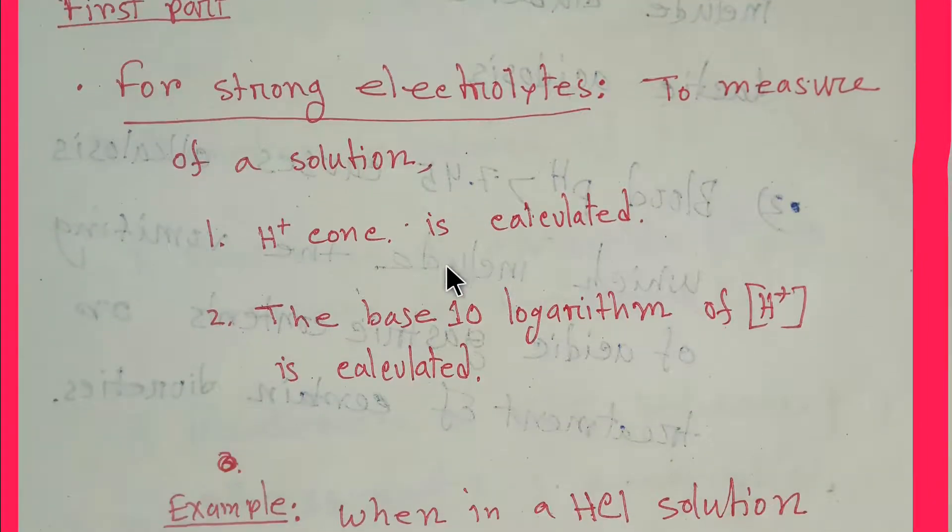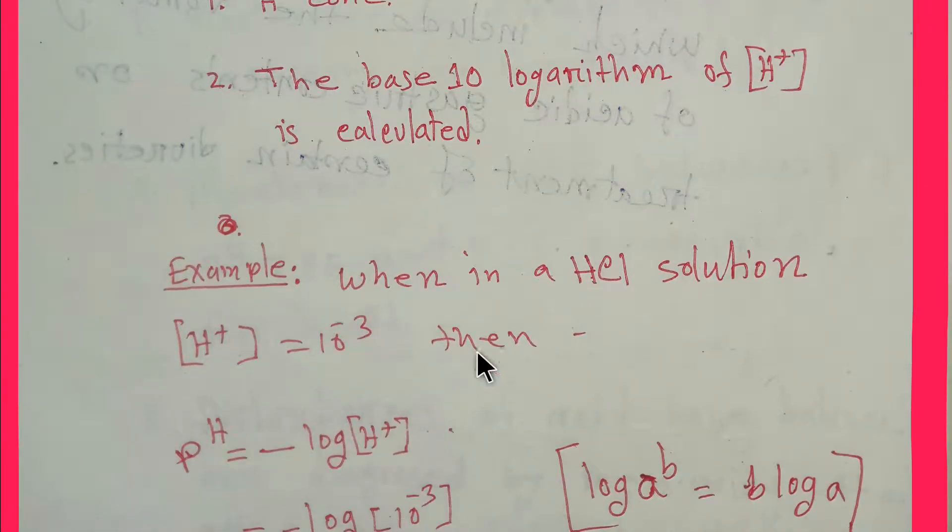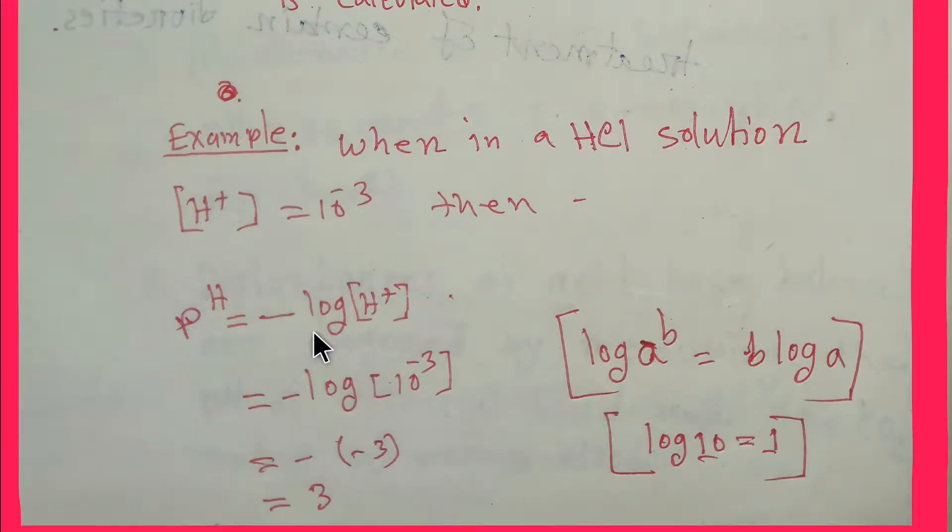For strong electrolytes, to measure pH of a solution, first we have to calculate the concentration of hydrogen ion, then we have to adopt a formula to calculate it. The formula is pH equals minus log the concentration